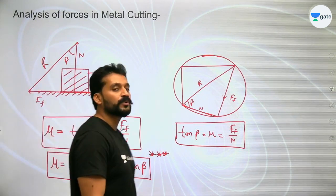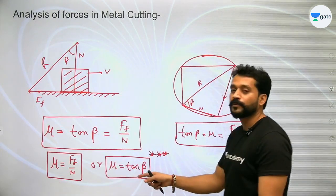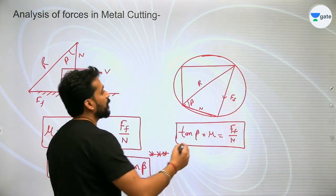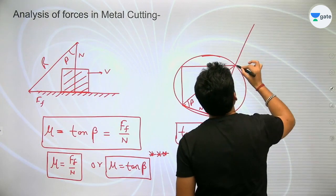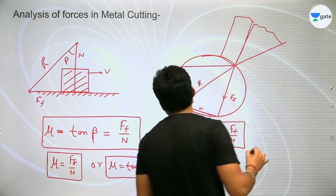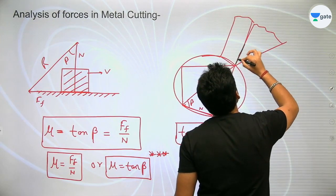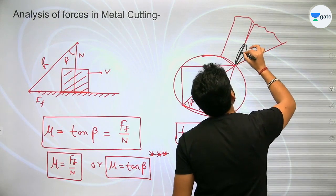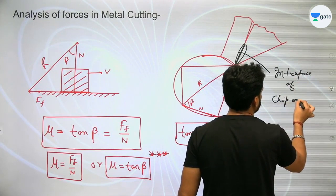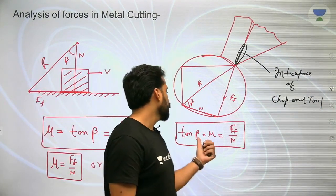So the new formula has arrived, and many questions will be solved with this formula ahead, so remember it. What is mu? Mu is tan(beta), or tan(beta) equals mu. So if the friction angle beta is given, you can find mu. From this we will find out the coefficient of friction at the interface of chip and cutting tool.